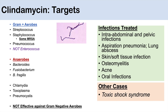Another important point is that clindamycin can be used in conjunction with other antibiotics in certain cases. One of those cases is toxic shock syndrome, where clindamycin can be used alongside a penicillin. Because of its mechanism of action — inhibiting protein synthesis — clindamycin can actually shut down or reduce the excess production of bacterial toxins seen in toxic shock syndrome.